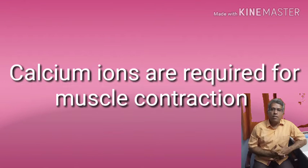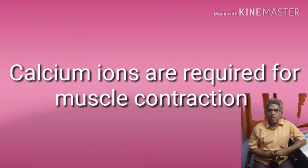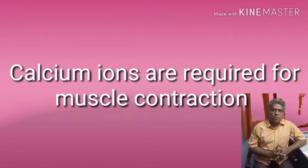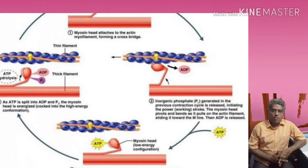Under the influence of this action potential, the terminal system of the sarcoplasmic reticulum, which stores calcium ions, now releases calcium ions. This is about excitability — the first step in muscle contraction.